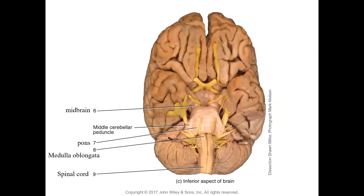This is the inferior view of a human brain showing the lower end of the spinal cord, the medulla oblongata, the pons as these bulges, the middle cerebellar peduncle on the side, and the midbrain up above. The cerebellum is on either side, the cerebrum is above, and the yellow structures are all the cranial nerves coming out.